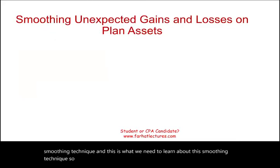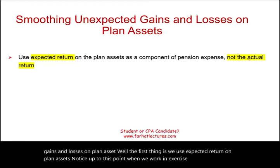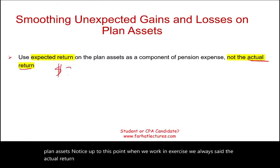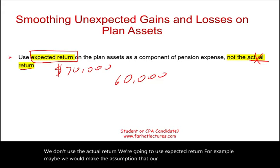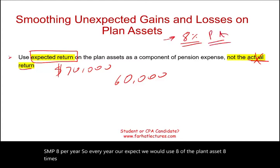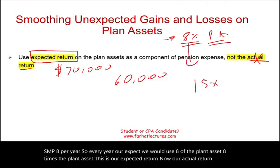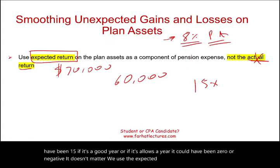How do we smooth gains and losses on plan assets? The first thing is we use the expected return on plan assets. Notice up to this point in exercises we always used the actual return — say $20,000 or $60,000. Well, we don't use the actual return; we use the expected return. For example, we might assume our return is based on the historical S&P at 8% per year. So every year we would use 8% times the plan asset as our expected return. The actual return could have been 15% in a good year, or zero or negative in a bad year — it doesn't matter. We use the expected return to compute pension expense.